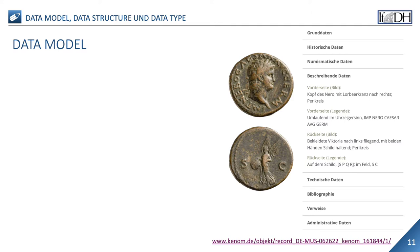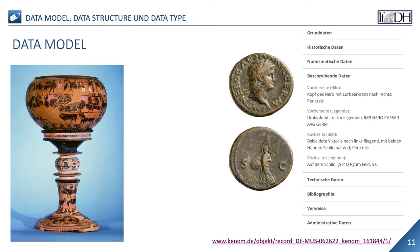Designing a good conceptual data model requires a good understanding of the application domain. This usually involves asking fundamental questions about the items of interest to the data structure, such as: Can a vase painter also be the potter? Or, if a mixing pot is on a painted stand, is that two vases or just one? Or, if a site goes by more than one name, is that one site or are there two, and how do you determine that? The answers to these questions establish definitions of the terminology used for entities such as producer, image carrier, site, find spot, and their relationships and attributes.